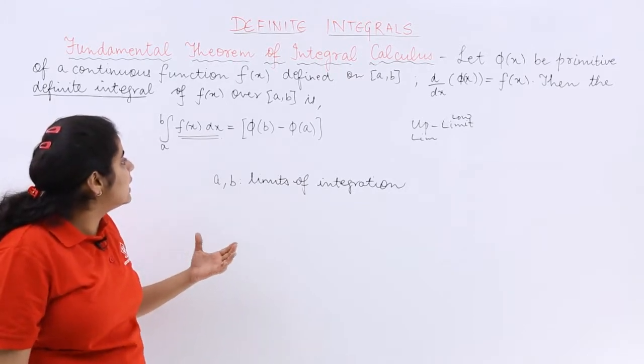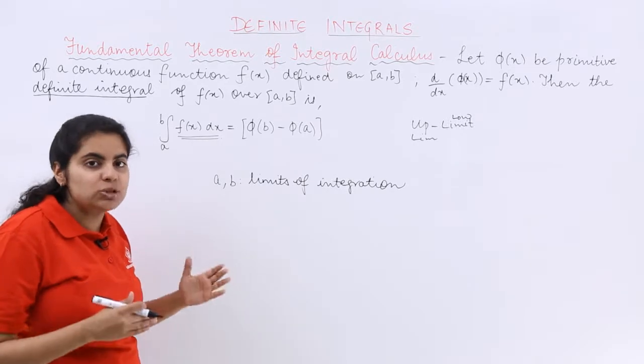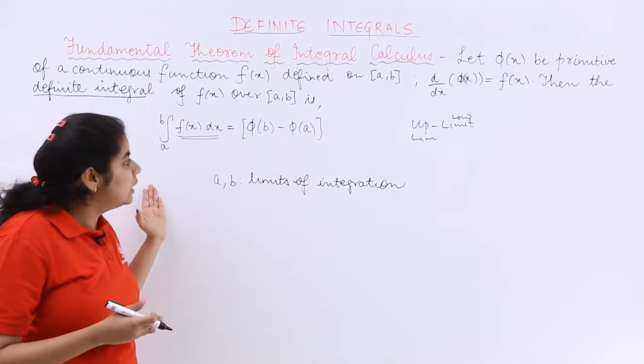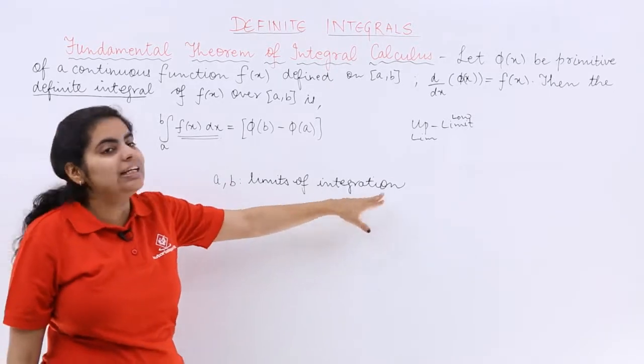The other thing, what do you call a and b as? a and b individually are definitely called as lower limit and upper limit respectively, but together they are called as the limits of integration.